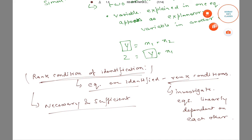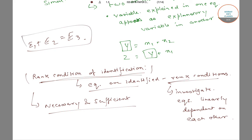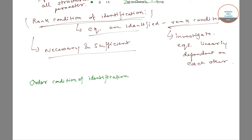Suppose we have three equations — equation 1, equation 2, and equation 3 — in which equation 3 is the sum of equations 1 and 2. In this situation, it is impossible to identify all the structural parameters. That is the rank condition for identification.